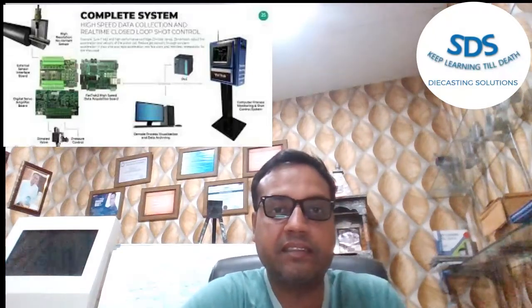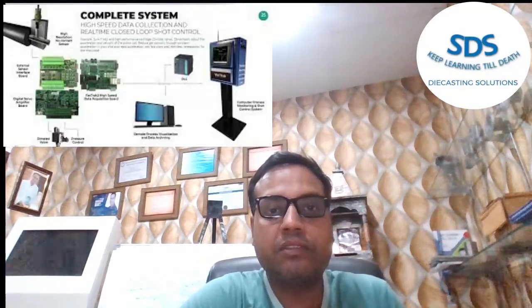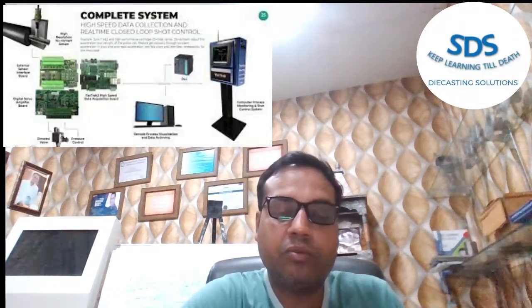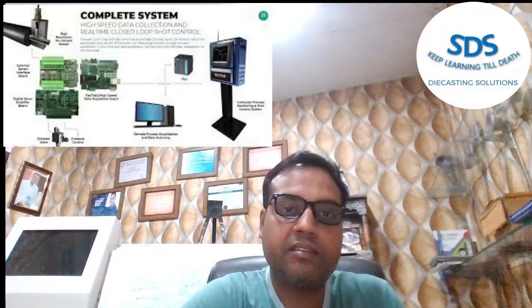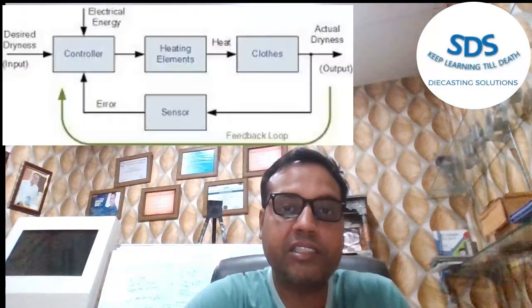Closed loop control has been used for both shot end and thermal control in the die casting industry. The shot end control system uses closed loop control for both speed control and position. The only concern about using closed loop control is reaction time.